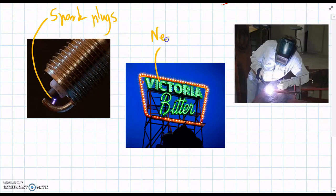And we also have neon signs. They light up because they're filled with plasma, when we turn on the electricity.